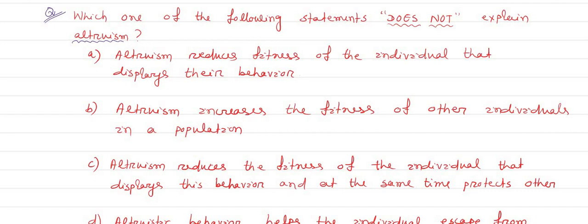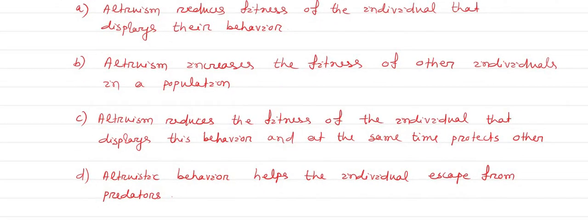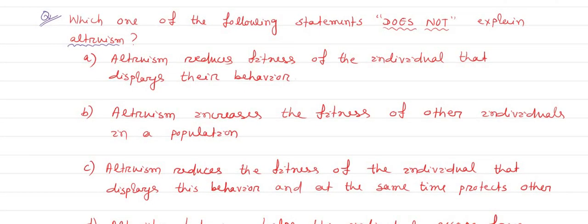This is called altruism or altruistic behavior. We have to find out from the given four statements regarding altruism which statement does not imply altruistic behavior.